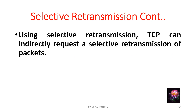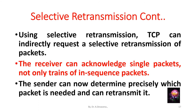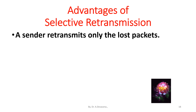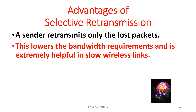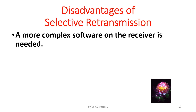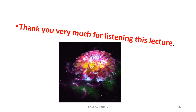Using selective retransmission, TCP can request retransmission of specific packets. The receiver can acknowledge individual packets, not only trains of in-sequence packets, allowing the sender to determine precisely which packet is needed and retransmit only that. Advantages: the sender retransmits only lost packets, lowering bandwidth requirements and helping especially on slow wireless links. Disadvantages: more complex software is needed on the receiver, and more buffer space is required to re-sequence data and wait for gaps to be filled.